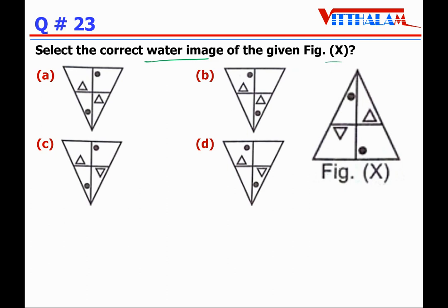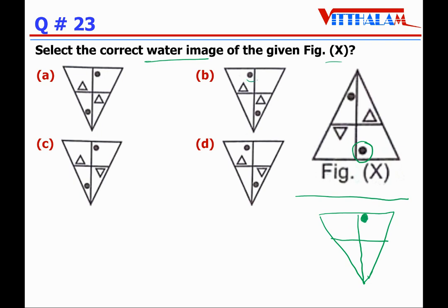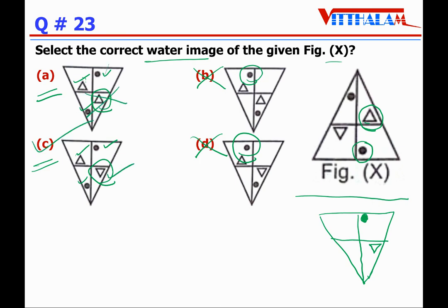Question 23: Select the correct water image of figure X. The water image will have an opposite triangle, then a line, and the shaded circle will be reflected to the correct position. Comparing options A and C, the triangle is the key difference. In the correct water image, the triangle is opposite, so option A cannot be correct. Therefore the answer is C.